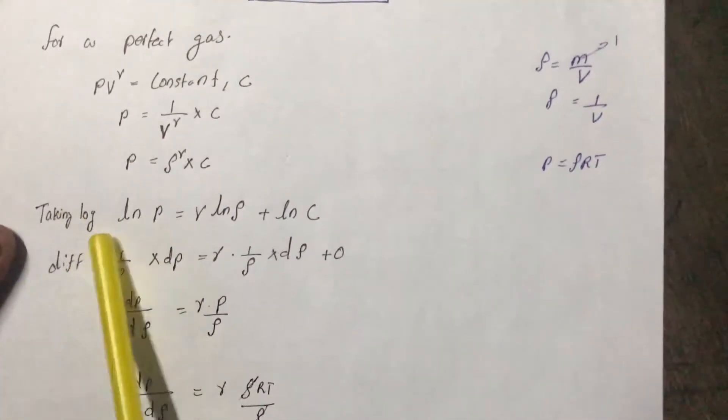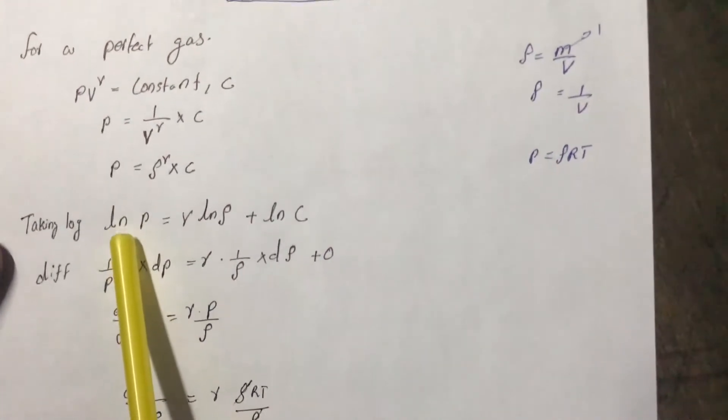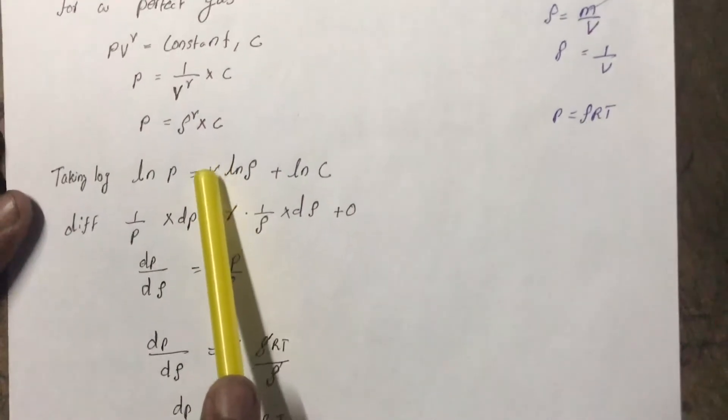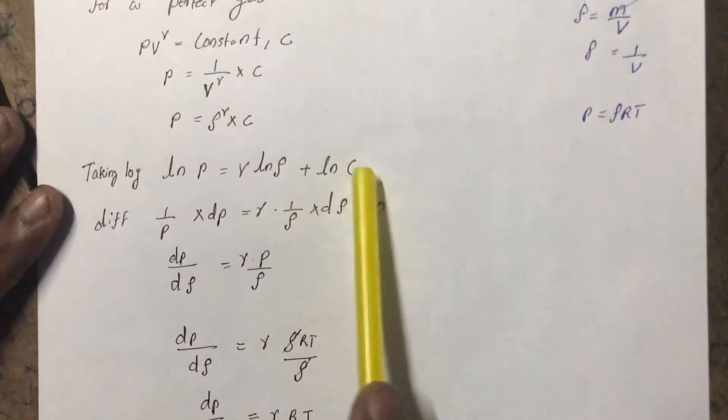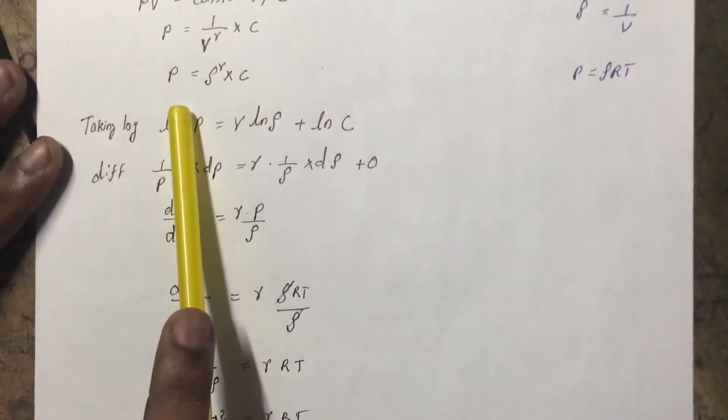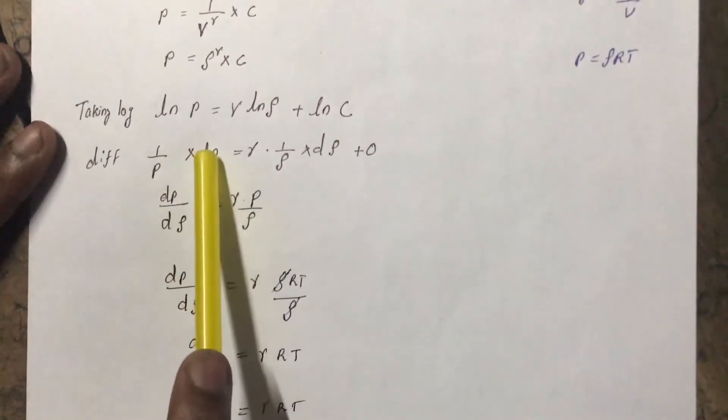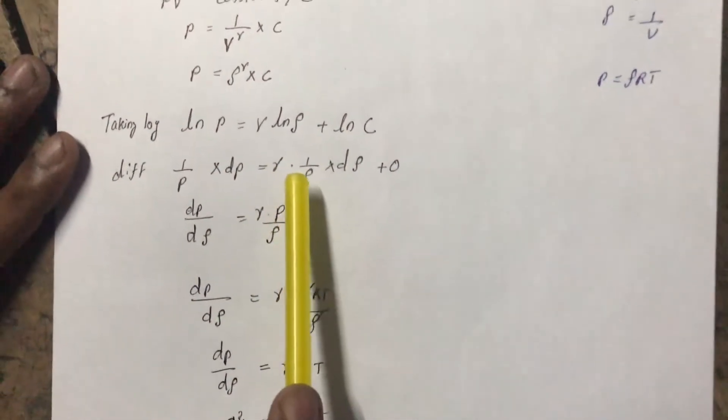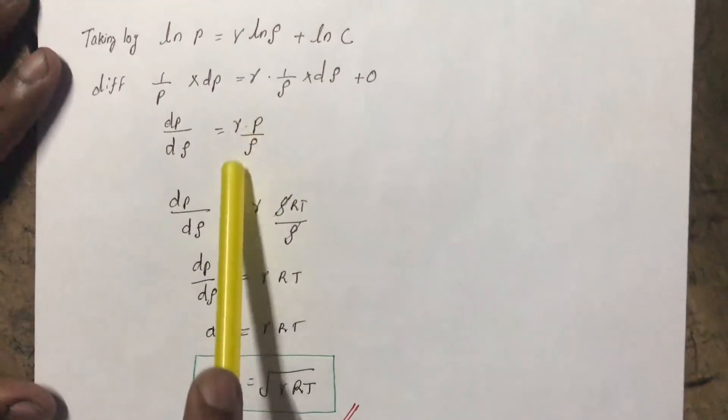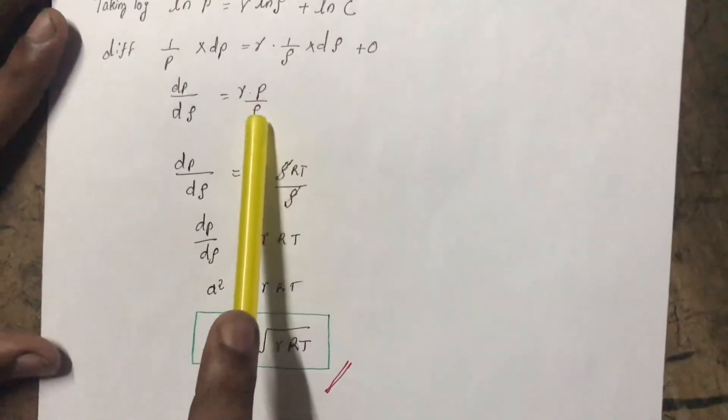Taking log on both sides, natural logarithm, it becomes ln p is equal to gamma into ln rho plus ln c. Differentiating this equation, logarithm of a function differentiated is the reciprocal of the function into the derivative of the function. That becomes 1 by p into dp is equal to gamma into 1 by rho into d rho plus 0. Therefore, dp by d rho can be found as an expression as gamma into p by rho.